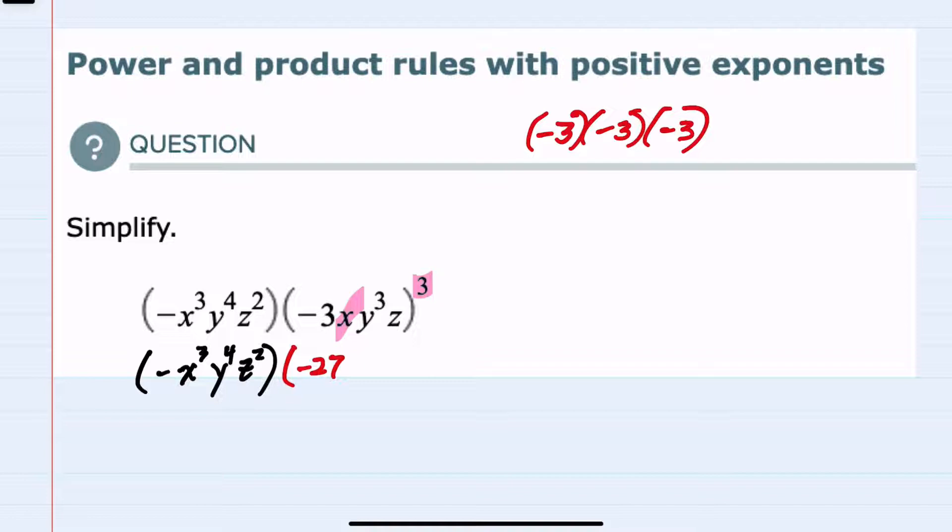When we have a variable raised to a power, the x can be considered just an x to the 1. We have 1x in there. And when we have x to the 1 raised to the third power, we know that in this situation we multiply those two powers. So 1 times 3 would be 3. This would be x to the third.